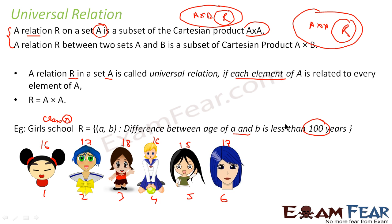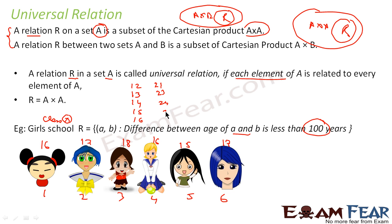Now if we take the Cartesian product A cross A, with girl 1 we get pairs (1,1), (1,2), (1,3), (1,4), (1,5), (1,6). Similarly with girl 2 we get (2,1), (2,2), (2,3), (2,4), (2,5), (2,6).